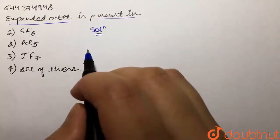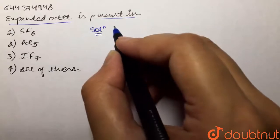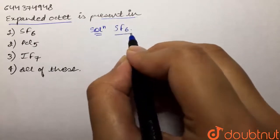Now if we take our first case, this is SF6. We have to tell whether it has expanded octet or not.